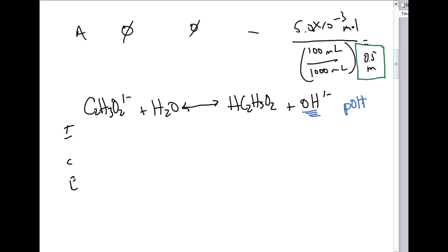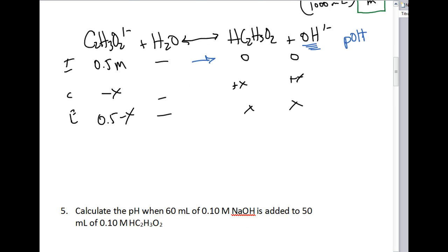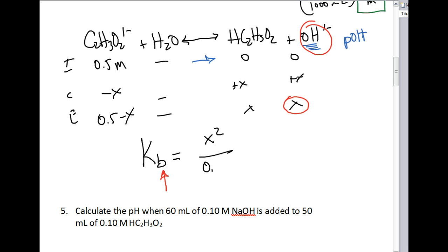Our starting concentration of acetate is 0.05 molar. We don't worry about water; acetic acid and hydroxide both start at zero. The reaction goes to the right: change row is –x for acetate and +x for both acetic acid and hydroxide. Equilibrium concentrations are (0.05 – x) for acetate and x for hydroxide. We set up the Kb expression: Kb = x² / (0.05 – x). We assume x is small so we drop the x in the denominator.